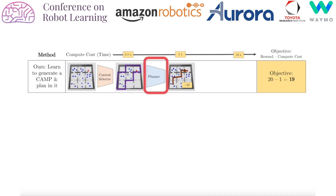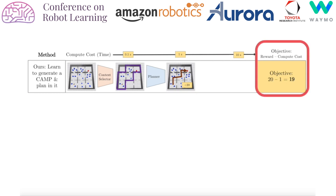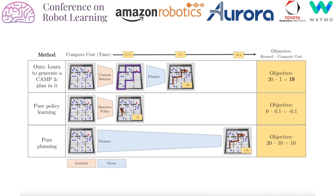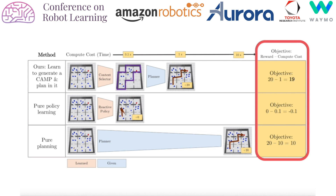We then plan in the reduced task and execute the found policy. This results in high reward with only low computational cost incurred from planning and execution. A learned reactive policy is very cheap to compute but often yields low rewards, since generalizing from training to test tasks is very challenging. On the other hand, pure planning yields high rewards but at high computational cost. CAMPs lie between these extremes, optimizing the trade-off between rewards and computational time.